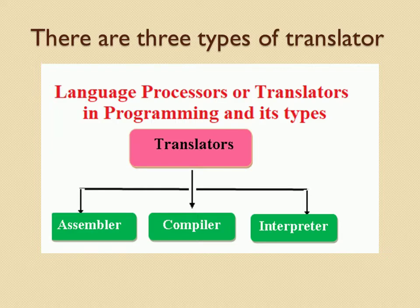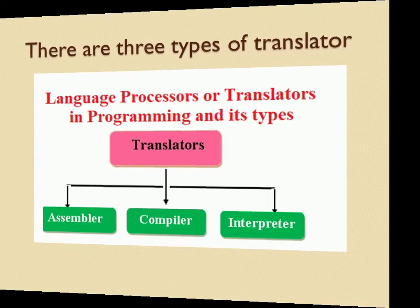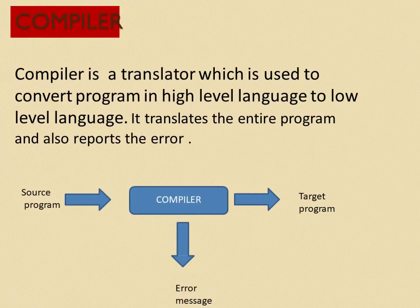The three types of translator are: number 1 — Assembler, number 2 — Compiler, and number 3 — Interpreter.